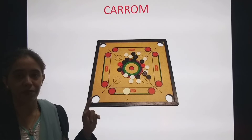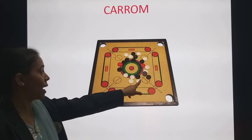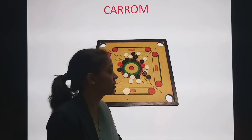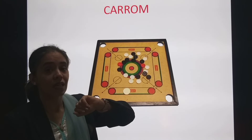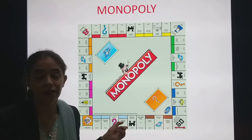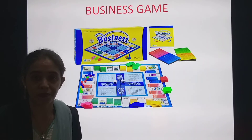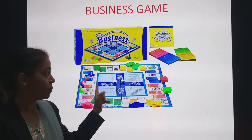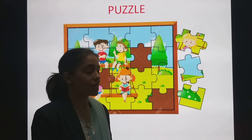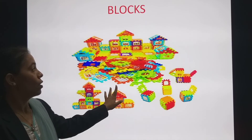Then Carrom. In Carrom there are small coins of two colors — black and white — and this is the Striker, which you use to hit them. C for Carrom. Then the next is Monopoly — M for Monopoly. Then Business Game. Then Puzzle — P for Puzzle. Then the last is Blocks — B for Blocks.